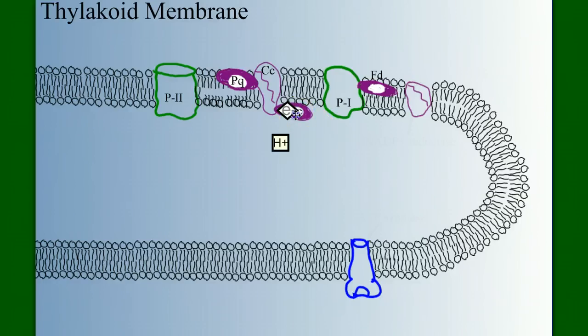Recalling that this is the non-cyclic pathway, the electron doesn't go back to P680. Instead, it falls into P700, or photosystem 1.